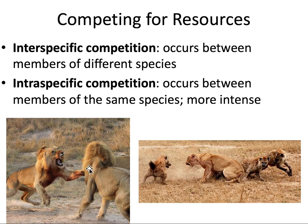Here on the bottom, you can see two lion males, and they are probably competing over control of a pride or control over a food source. This would be intraspecific competition because they are both members of the same species. Intraspecific competition is usually more intense because they're going after the same exact resources.